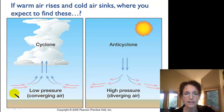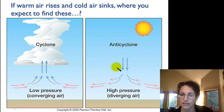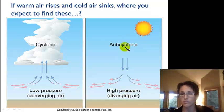At the intertropical convergence zone — the ITCZ — we have warm air that rises. And over here on the right side, we have falling air. We have a high pressure at the surface, and falling air is cold air that's sinking.